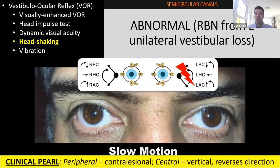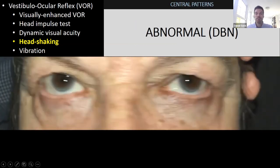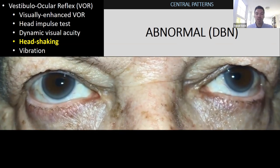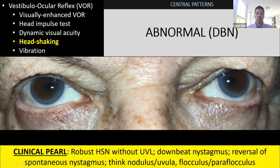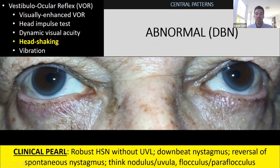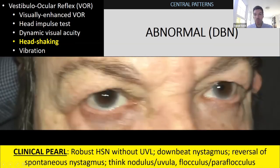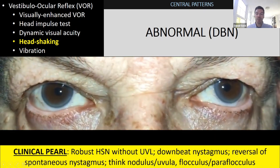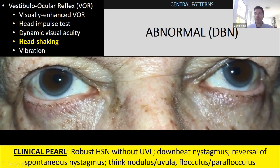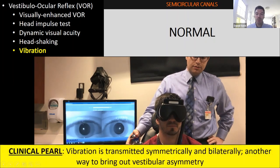For central disorders, different patterns appear: vertical downbeat is one. If a patient in the emergency department has right-beating nystagmus and after head shaking it becomes left-beating, that reversal suggests a central problem. This patient with cerebellar degeneration demonstrates cross-coupling — horizontal head shaking brings out downbeat nystagmus that wasn't there before, previously called 'perverted nystagmus.' A robust head-shaking nystagmus response without unilateral vestibular loss, or this cross-coupled response or reversal, points to the vestibulocerebellum — nodulus, uvula, or flocculus/paraflocculus.